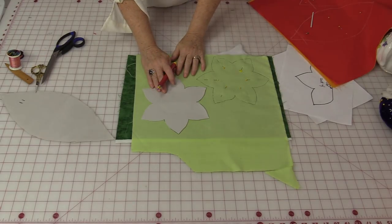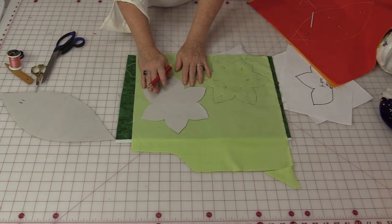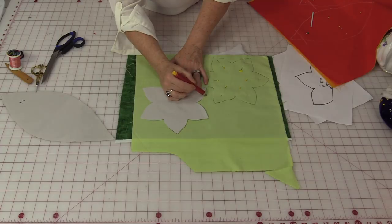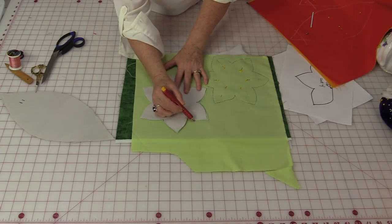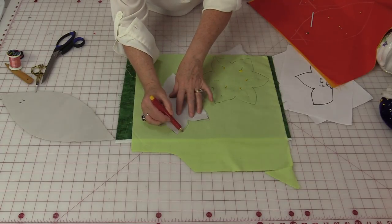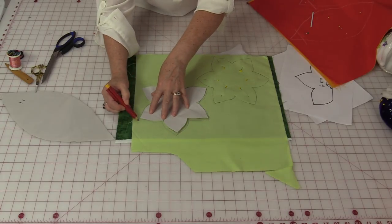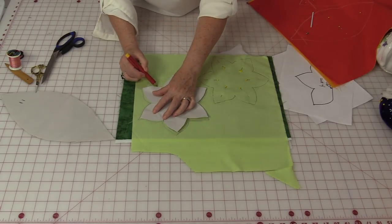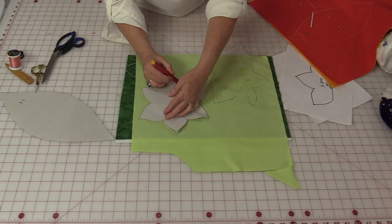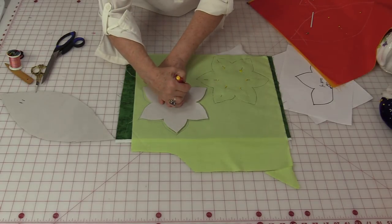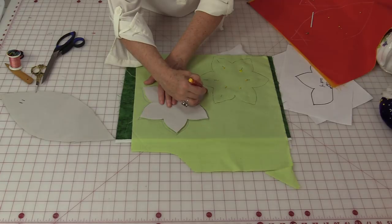And because flowers and leaves are not perfect, you do not have to trace them perfectly either. Just put the pattern down and just go around the piece. It doesn't have to be exact. Just trace around them. It's just giving you a guideline on where the pieces are going to go.